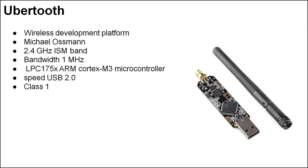Let's start with Ubertooth. Ubertooth is an open source wireless development platform suitable for Bluetooth experimentation. This tool is developed by Michael Osman. It works on the 2.4 GHz ISM band with a bandwidth of 1 MHz using a modulation scheme of frequency shift keying. It is based on the powerful LPC-175X ARM Cortex-M3 microcontroller with full speed USB 2.0. Ubertooth is one way to develop custom class 1 compatible Bluetooth devices.